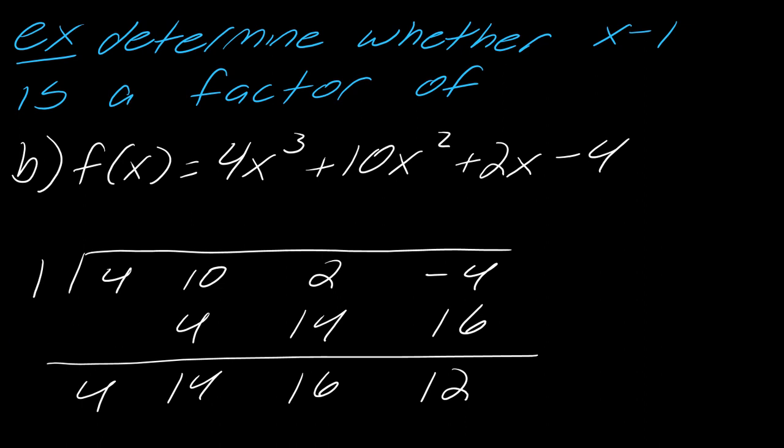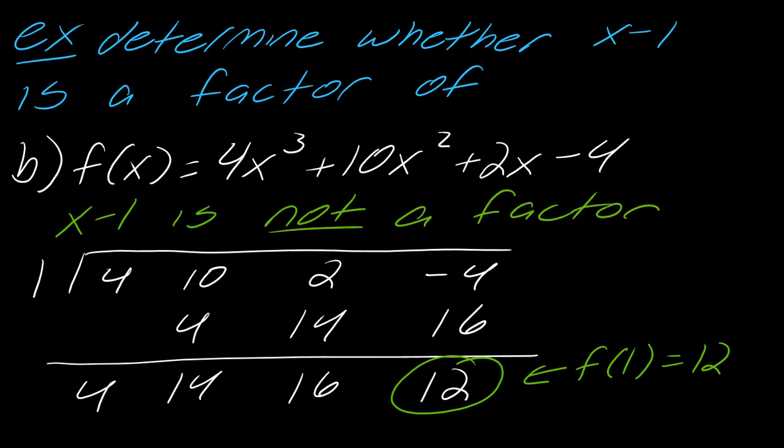So several interpretations we get out of this. This would mean that f(1) equals 12. But also, since this last number is not a 0, we can conclude that x minus 1 is not a factor. So it works like that.